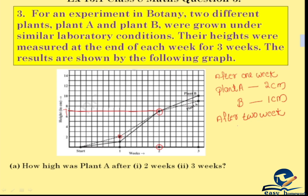After 2 weeks, Plant A is 7 cm. If you want to see Plant B, it's the single line. At the same point — 2 weeks — Plant B is also 7 cm. So after 2 weeks, both plants are the same height.